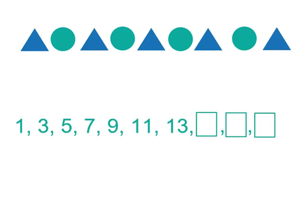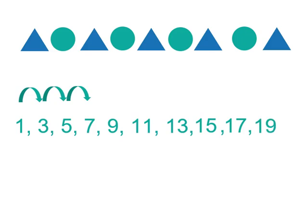With numbers like this, we look at how they change. So this pattern has our numbers increasing by 2. Sometimes it could be decreasing, but these are increasing by 2. So to continue the pattern, 13 plus 2 is 15, plus 2 is 17, plus 2 is 19.